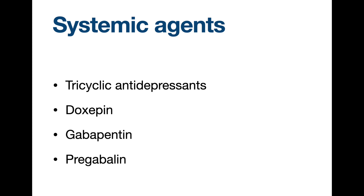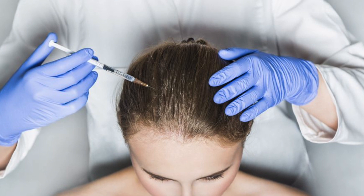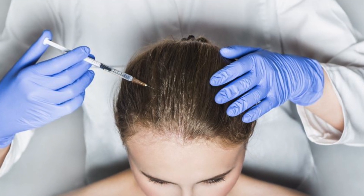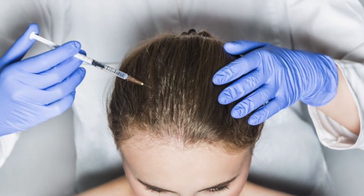Topical capsaicin may also be useful, as with other neuralgias. Fourthly, for systemic therapy, tricyclic antidepressants and doxepin are especially useful in people who have an emotional overlay. Gabapentin and pregabalin may also be useful. Fifthly, Botox injections have helped some patients. Botox acts by decreasing the mechanical sensitivity of the nociceptors and also inhibits neurogenic vasodilation through inhibition of sensory neuropeptide release.